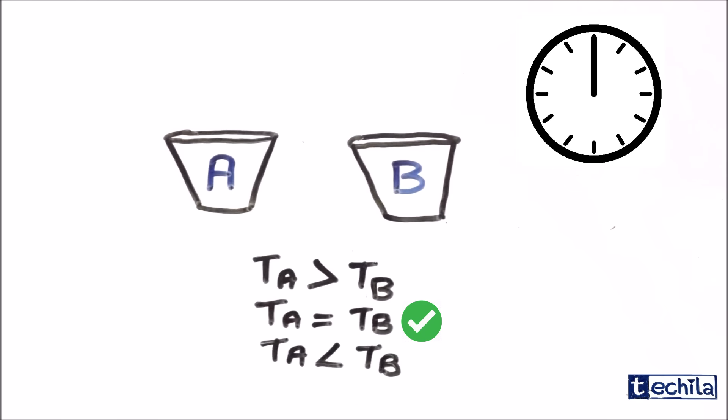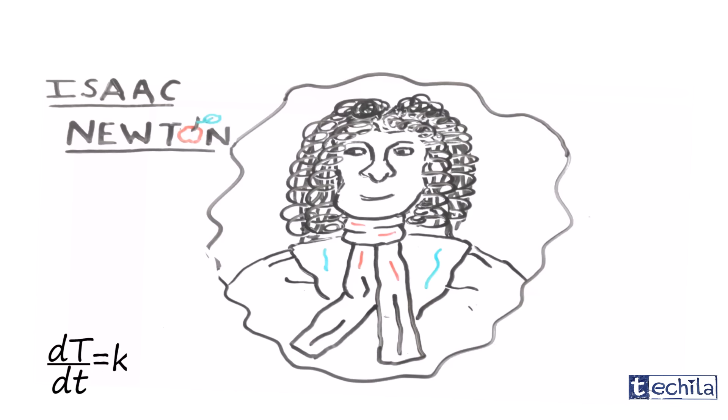This phenomenon was first demonstrated by Newton. His law states that the rate of cooling of an object is proportional to the difference between its own temperature and the temperature of the surrounding.